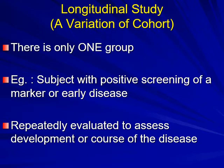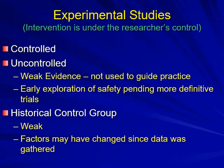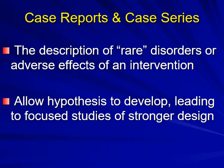A longitudinal study is a variation of a cohort study, but with only one group. For example, subjects with positive screening of a marker or early disease are repeatedly and prospectively evaluated to assess the development or course of the disease. Experimental studies involve intervention under the researcher's control, either controlled or uncontrolled. This is weak evidence, used only for early exploration of safety pending more definitive trials. Historical control groups are also weak, as factors may have changed since data was gathered. Case reports and case series describe a rare disorder or adverse effect of an intervention, only allowing a hypothesis to develop leading to focus studies of stronger design.